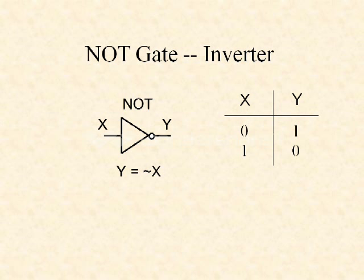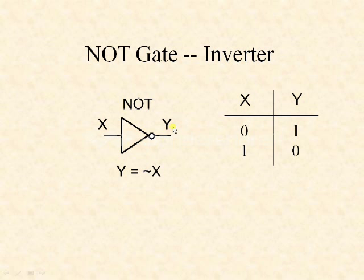The first basic gate is the NOT gate. It is also called an inverter. Here you can see the symbol or representation of a NOT gate. The NOT gate accepts only one input and provides only one output. Here the input is x and the output is y, and the output expression of the NOT gate is y equals complement of x, or x bar.